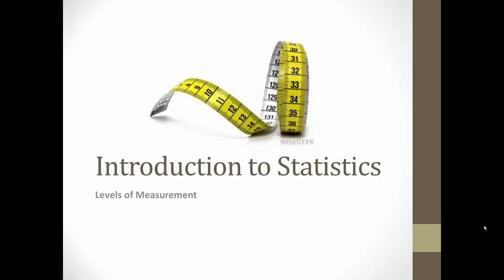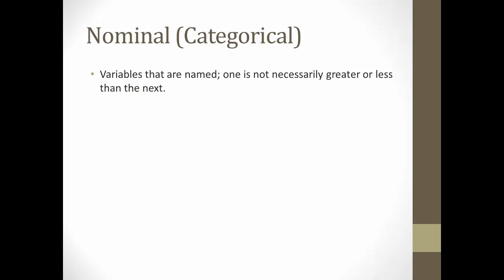Hello everyone. Today we're going to talk about levels of measurement. The first level of measurement we want to discuss is nominal, which is also called categorical. These are variables that are named. One is not necessarily greater or less than the next.